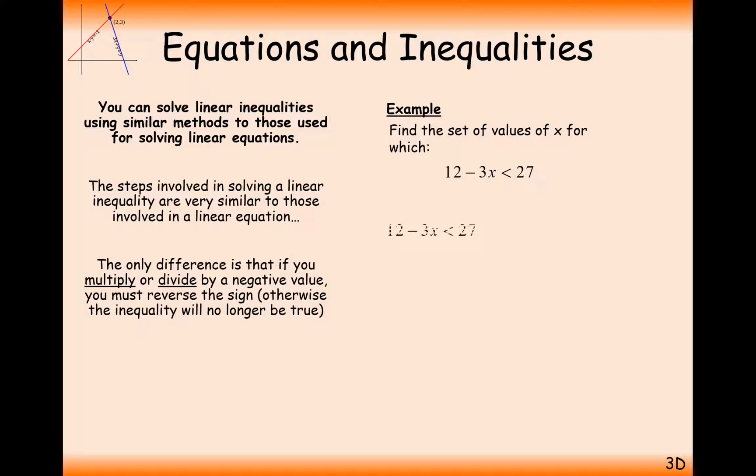In the next question here, we've got 12 minus 3x is less than 27. In this case here, we can subtract the 12 and divide through by 3. Now, with this negative here, we can either add it onto the other side and take away the 5, or what we can do is we can multiply by minus 1, but make sure we reverse the sign when we do that. This is how you could solve the equation using this reversing the sign rule when you multiply by minus 1. The same thing works as well when you divide by numbers that are negative.